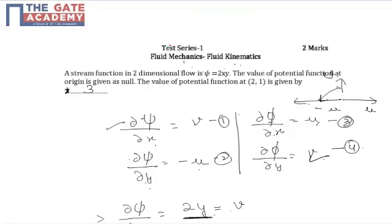Hence the correct answer for this numerical response type question is 3. Students are advised to see this clip again and again so that they remember each and every step — everything is very logical. Thank you.